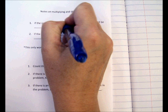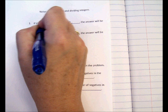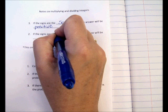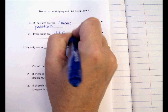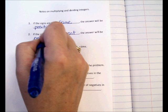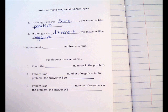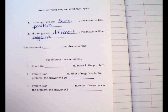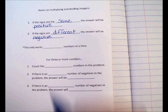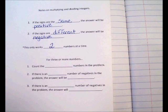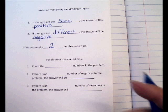If the signs are the same, the answer will be positive. If the signs are different, the answer will be negative. This is different from the song you learned for addition and subtraction. Here, same signs give a positive answer; different signs give a negative answer.